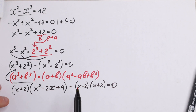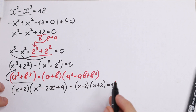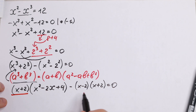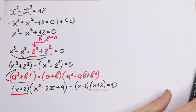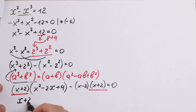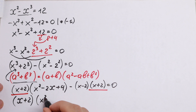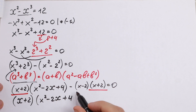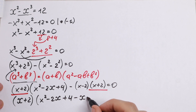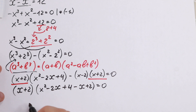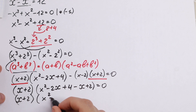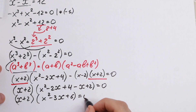We now have a really good situation. This is our first expression, this is our second expression, and we have a product. Moreover, we have the same (x plus 2) in both expressions, so we can factor out (x plus 2) from both. After factoring, we get (x plus 2) times all the rest: x squared minus 2x plus 4, and then minus x. If we simplify, we get (x plus 2)(x squared minus 3x plus 6) equal to 0.